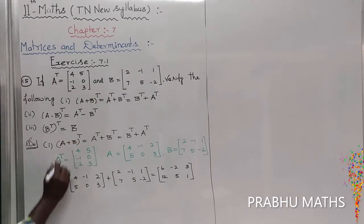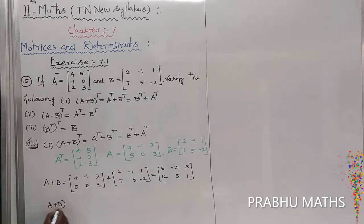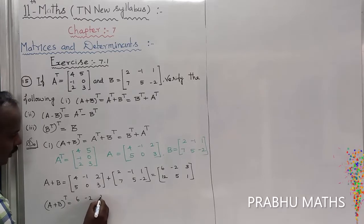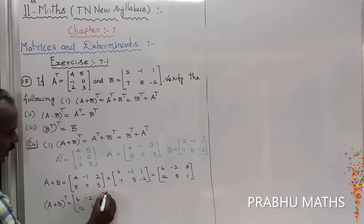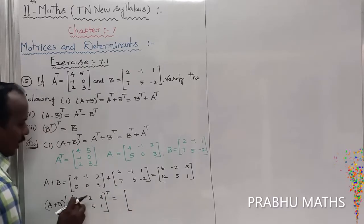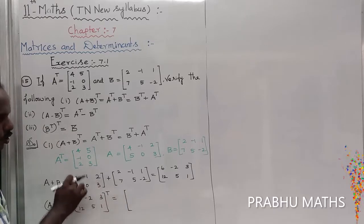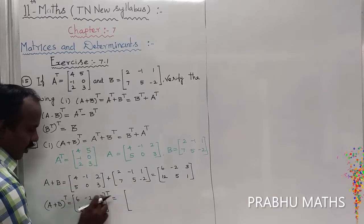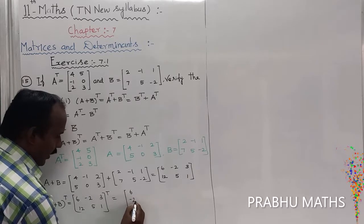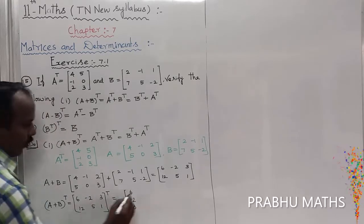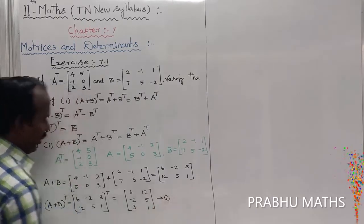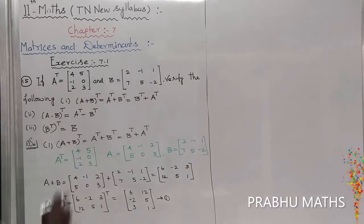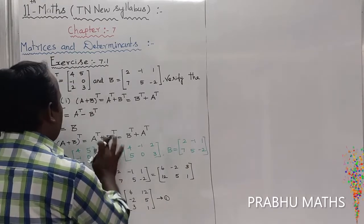Now find A plus B the whole transpose. A plus B equals the matrix 6, minus 2, 3 and 12, 5, 1. Taking the transpose, column interchanges to row: first row becomes 6, minus 2, 3 and second row becomes 12, 5, 1. That is equation number 1.